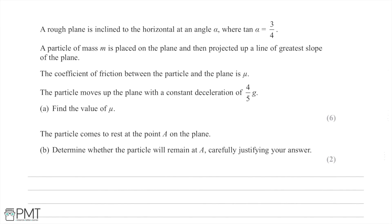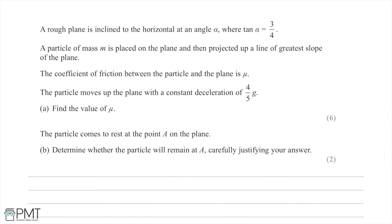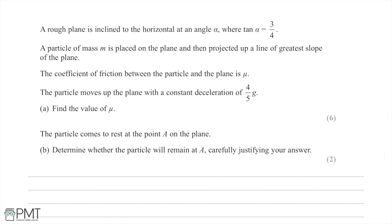In this question we have a rough plane inclined to the horizontal at angle alpha, where tan alpha equals 3 over 4. A particle of mass m is placed on the plane and projected up the plane along a line of greatest slope. The coefficient of friction between the particle and the plane is mu. The particle moves up the plane with a constant deceleration of 4 over 5 g, and in part (a) we are asked to find the value of mu.